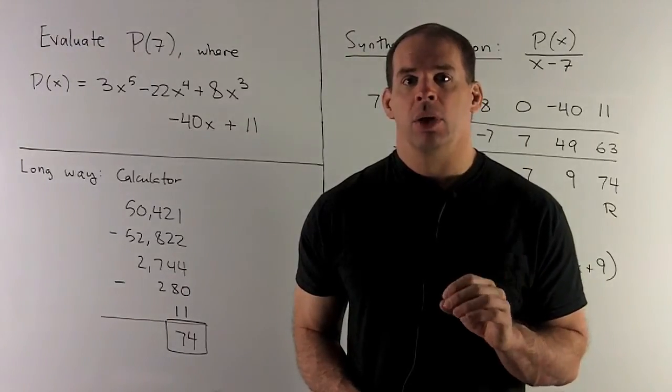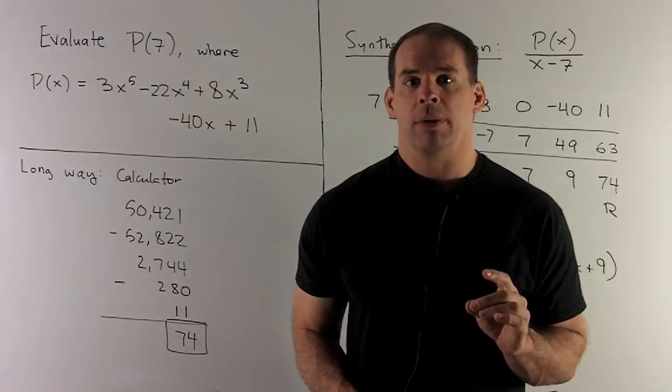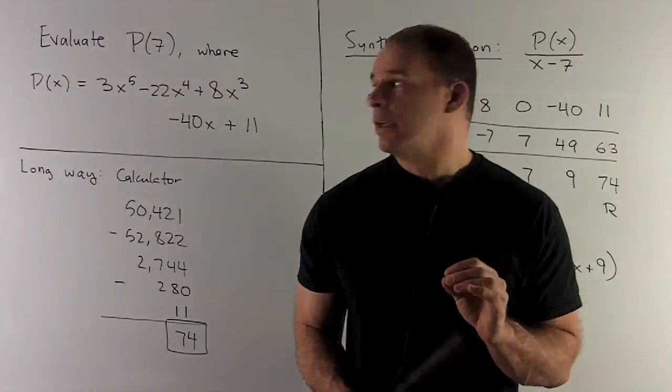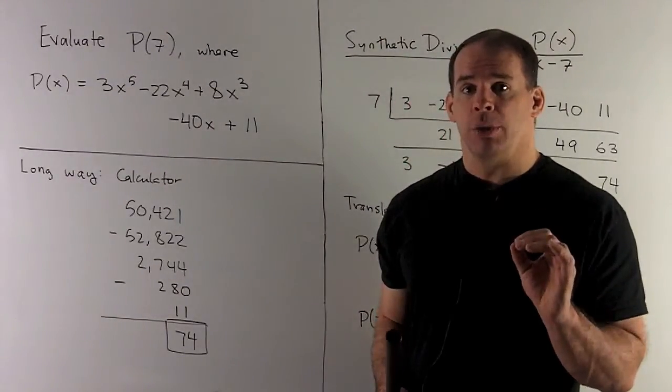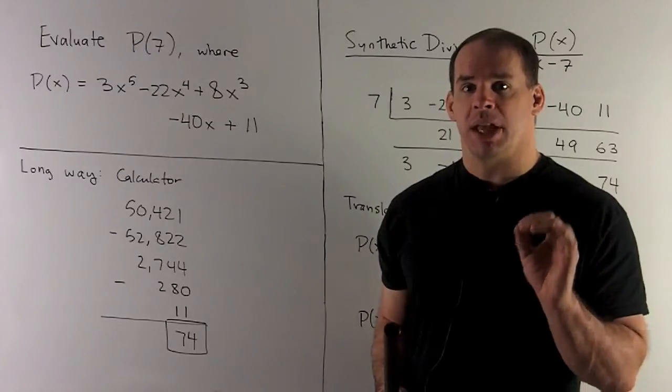Evaluate P of 7, where P of X is the polynomial 3X to the 5th minus 22X to the 4th plus 8X cubed minus 40X plus 11.